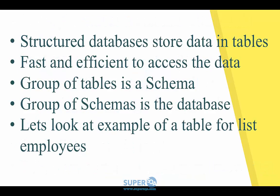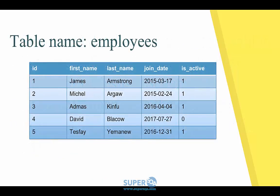Structured databases store information in a table format. They have a structure, that's why they are fast to access and easy to understand. A database contains many tables. Tables can also be grouped into schemas — so a schema is a group of tables. I will not get into the details of the terms and features, but I do want to show you a few simple queries. As an example, let's look at a table for employees — a table in some database where they keep a list of employees, and the name of the table is 'employees'.